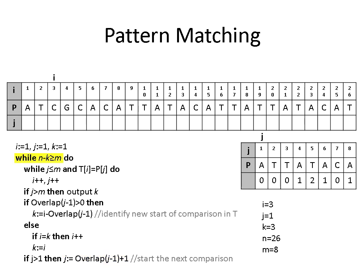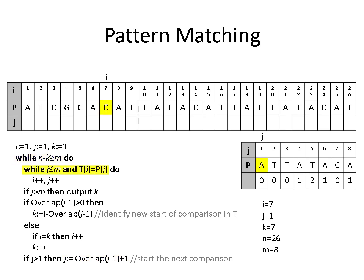Because J equals 1, we're comparing the first character of our pattern to the current character of our target sequence, which is C. This is not a match, so I and K are incremented by 1, and J does not change. Similarly, at position 4 and position 5 there is not a match, so I and K are incremented by 1 in each case. At position 6, we have a match, so I and J are incremented by 1. However, we have a mismatch at the next position, so K is set as I equals 7, and J is set back to 1. At position 7, we have a mismatch, I and K are incremented by 1, and J does not change.